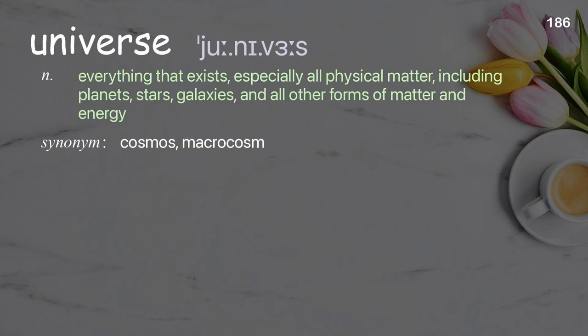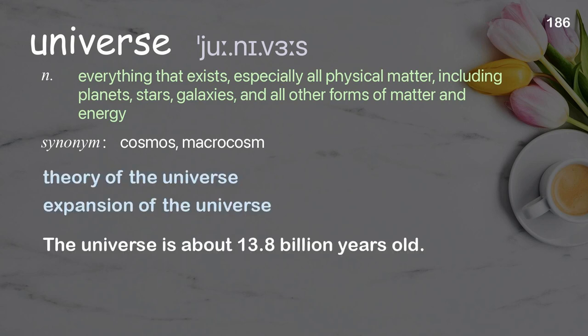Universe: everything that exists, especially all physical matter including planets, stars, galaxies, and all other forms of matter and energy. Examples: Theory of the universe. Expansion of the universe. The universe is about 13.8 billion years old.